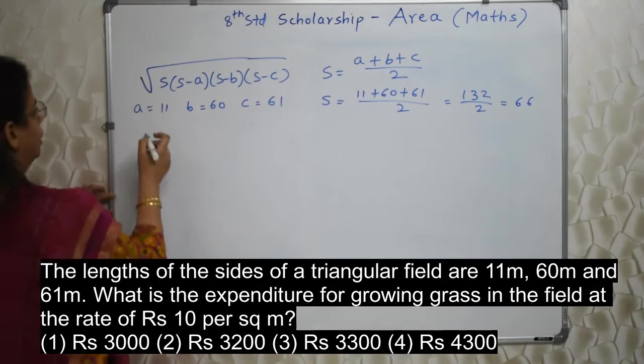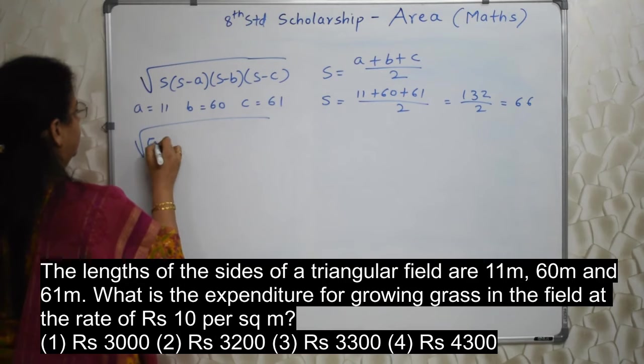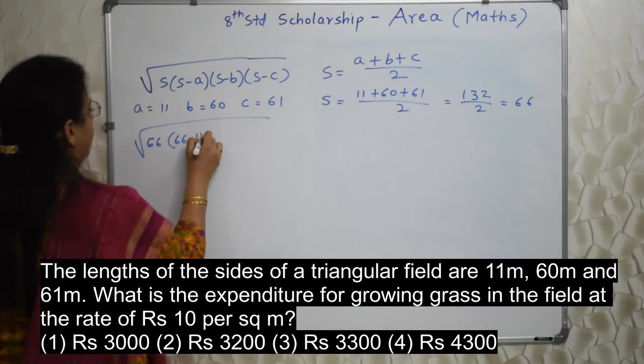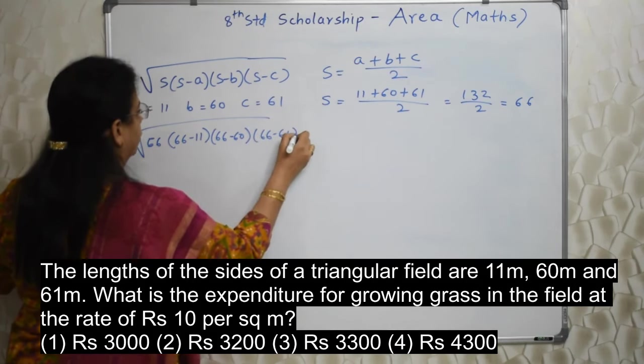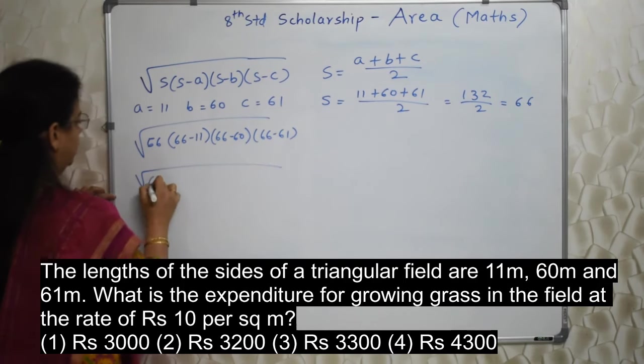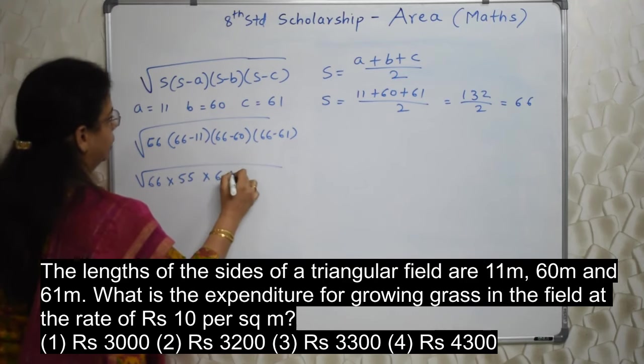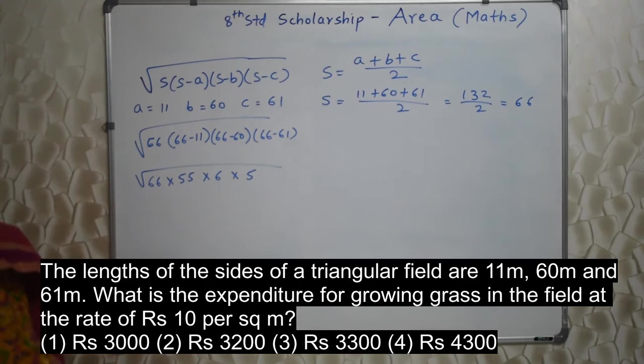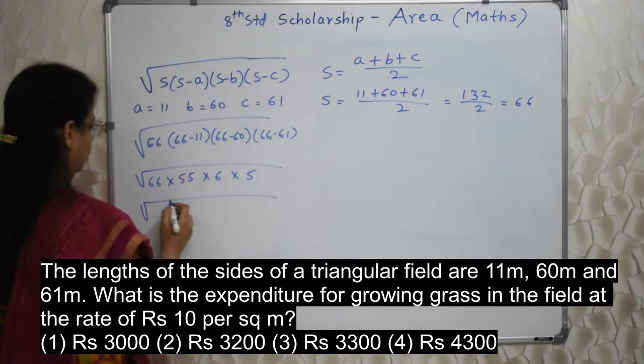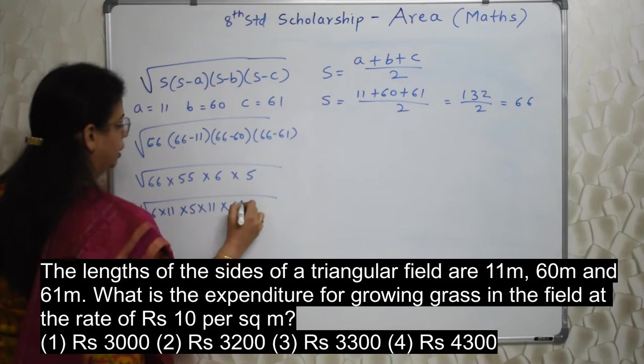Now let us input this. S is 66, then 66 minus A is 11, then 66 minus 60, and 66 minus 61. Let's go ahead with the solution. 66, then here 66 minus 11 is 55, then here it is 6, and here it is 5. Now how to find out such a big number and then its square root? It is difficult. Not at all. See, 66 means 6 into 11, 55 means 5 into 11, and this 6 and 5 as it is. Now there are 2 times 11.